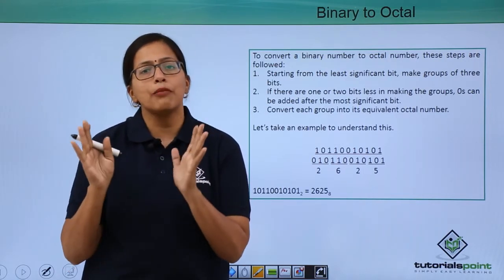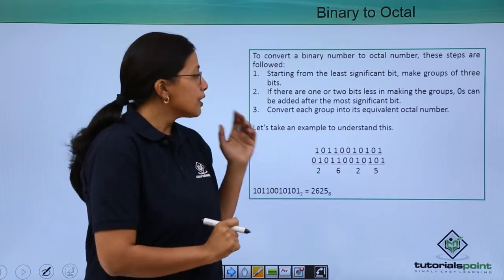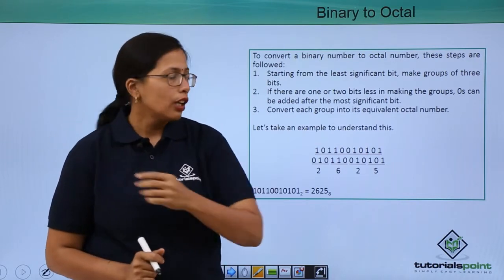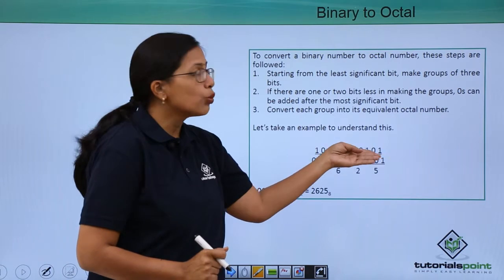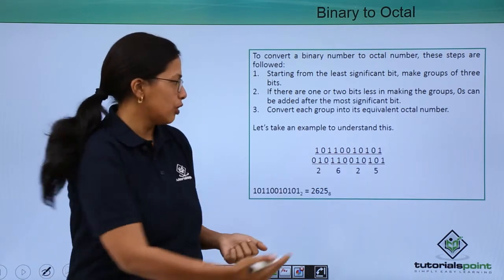Here, I am trying to establish the relationship between binary number and octal number system. Since 8 is equivalent to 2 to the power of 3, what I will do is I will make groups of 3 of this binary number starting from the rightmost digit.